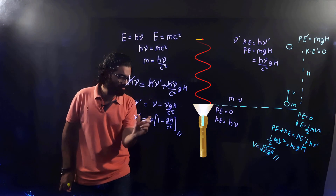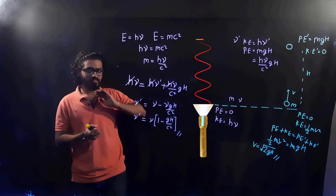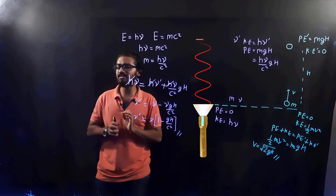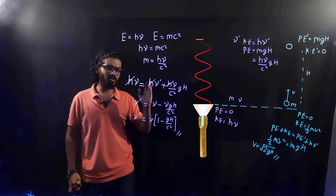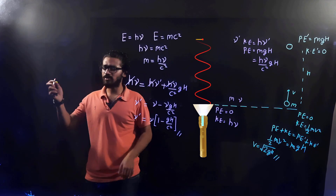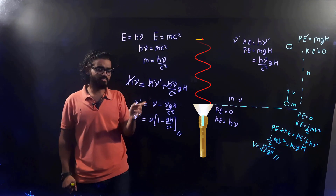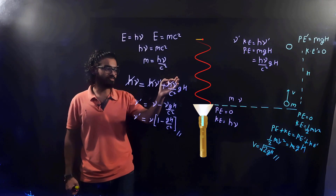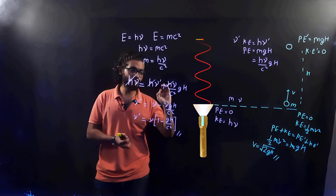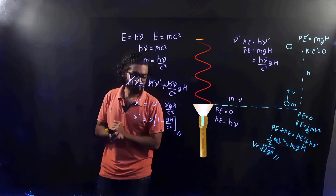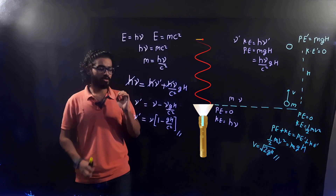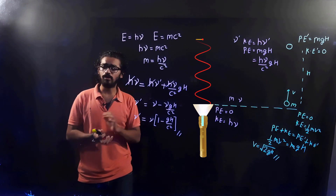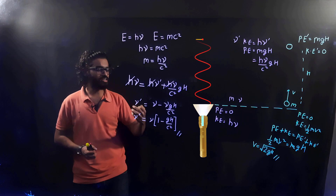Since the frequency is decreasing, we call this a red shift. Whenever frequency decreases we call it a red shift, and whenever frequency increases we call it a violet shift. The reason is that the frequency of red light is lower than that of violet light. This red shift is happening because the photon is overcoming the gravitational pull of a planet or star — and that is why it is called gravitational red shift of a photon.